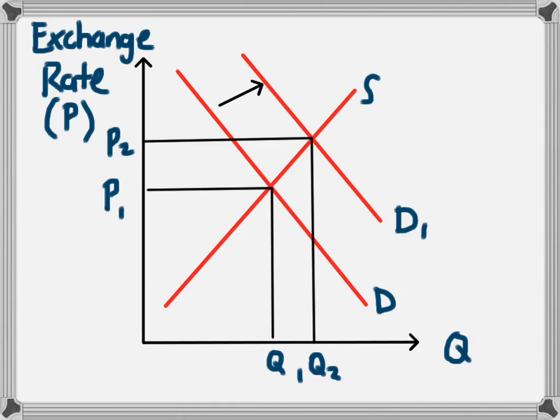To think of the factors which may have caused this demand, we should think about who would want to get the currency of that particular country — that would be people who are wanting to purchase things in that country. For example, people who want to buy that country's exports. People overseas who want to buy the products of that country will need to convert their own currency into this country's currency, demanding it in the foreign exchange market.